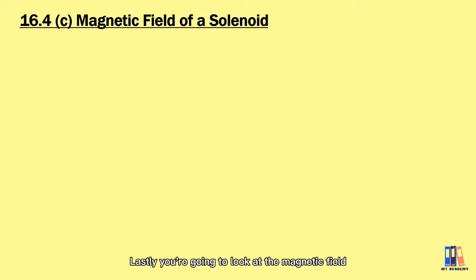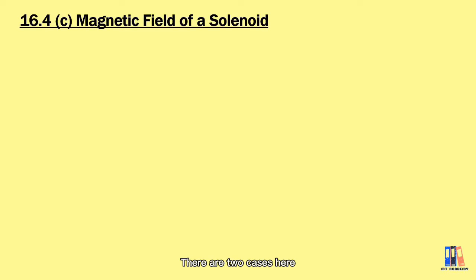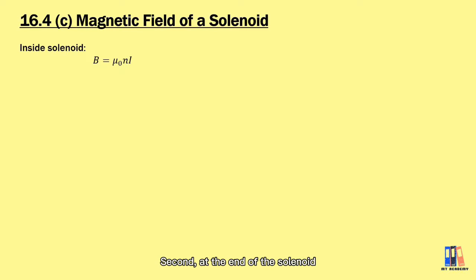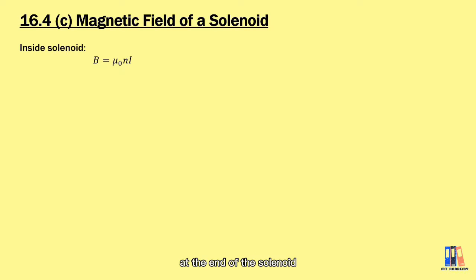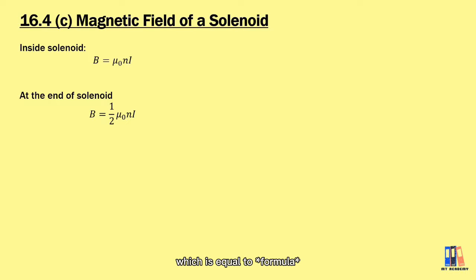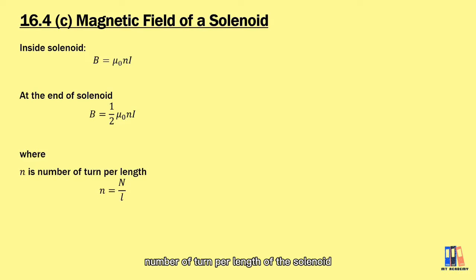Lastly, we look at the magnetic field produced by a solenoid. There are two cases. First, the magnetic field strength inside the solenoid is given as B = μ₀nI. Second, at the end of the solenoid, because the magnetic field spreads out, the strength is only half of that inside, equal to ½μ₀nI. Here, n is the number of turns per unit length of the solenoid, calculated as the ratio of number of turns to the length of the solenoid.